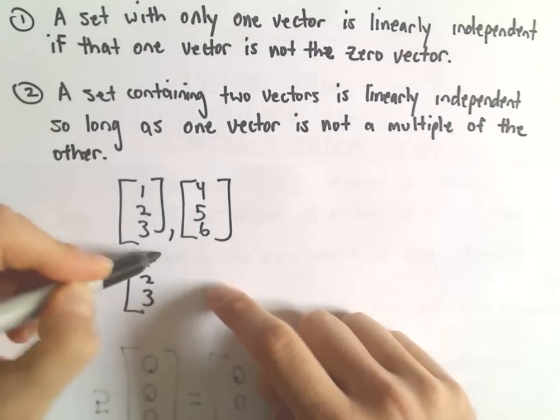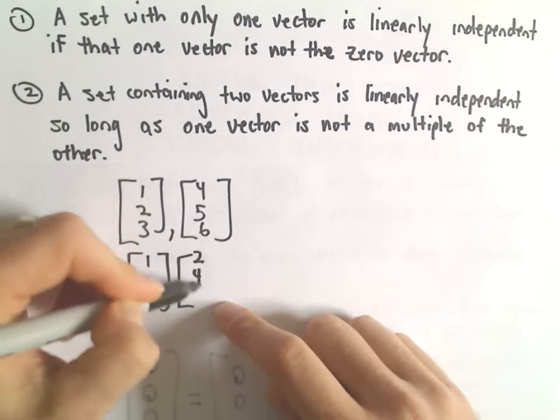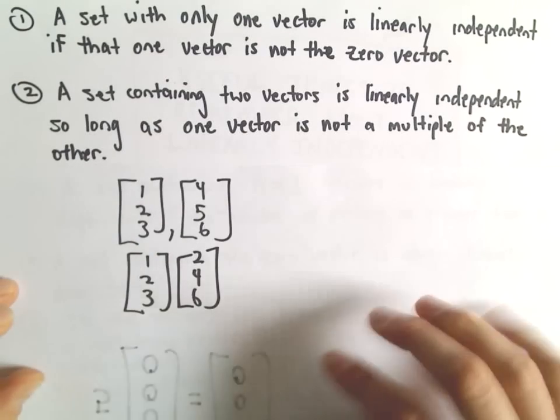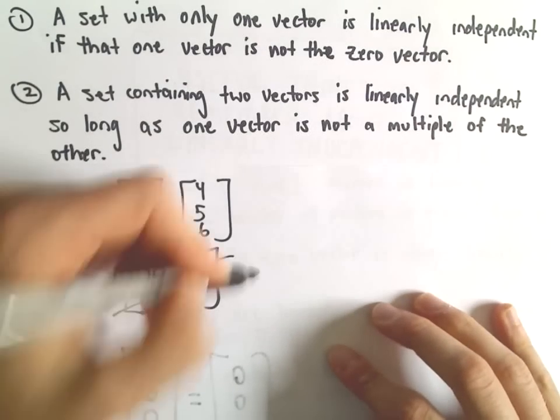But [1, 2, 3] and [2, 4, 6], those would not be linearly independent. Those would be dependent.